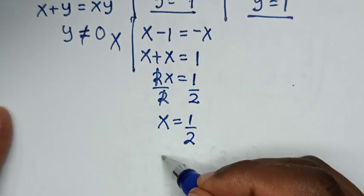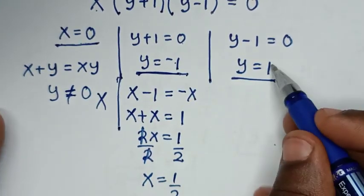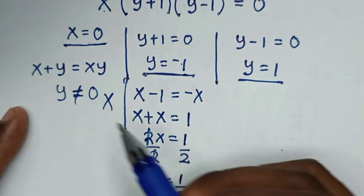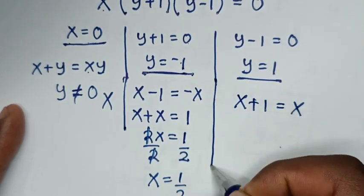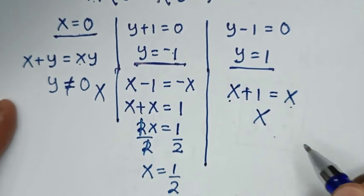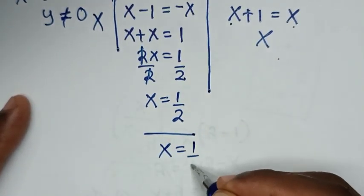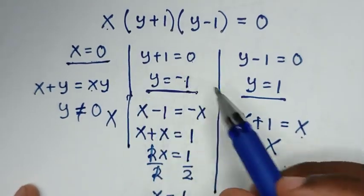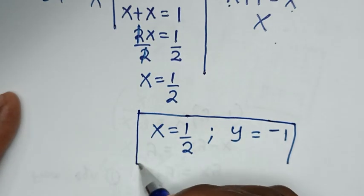So we get x equal to one half and y equal to negative 1. Substituting y equal to 1 into equation 1 gives x plus 1 equal to x, which is impossible. Therefore, the only solution is x equal to one half and y equal to negative 1.